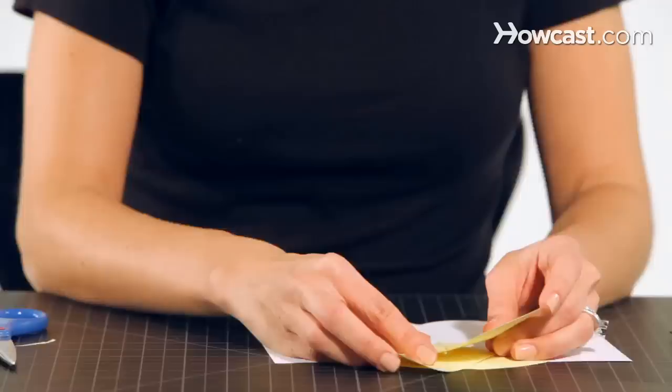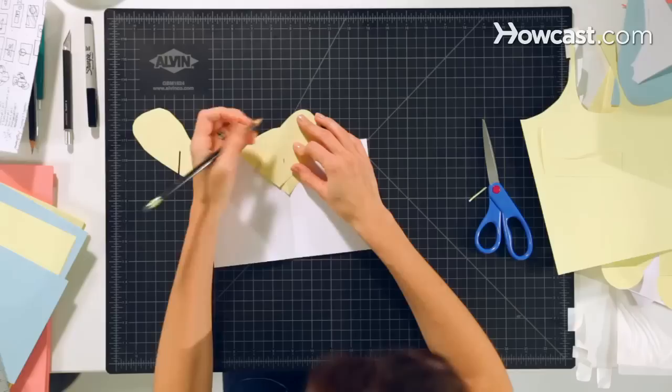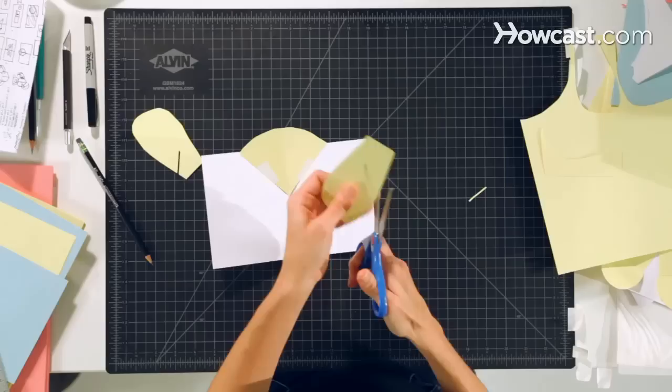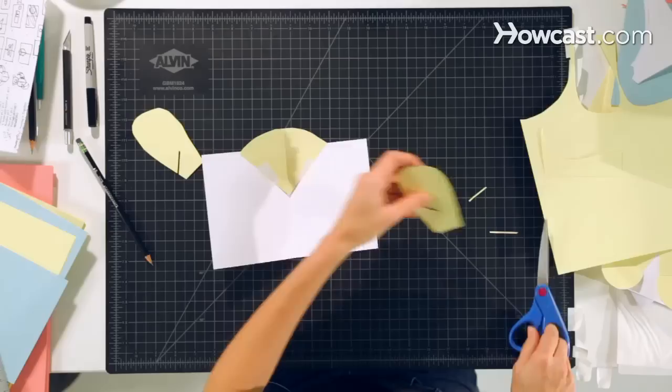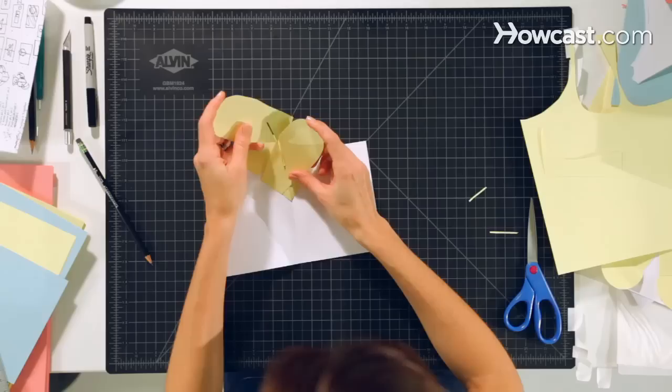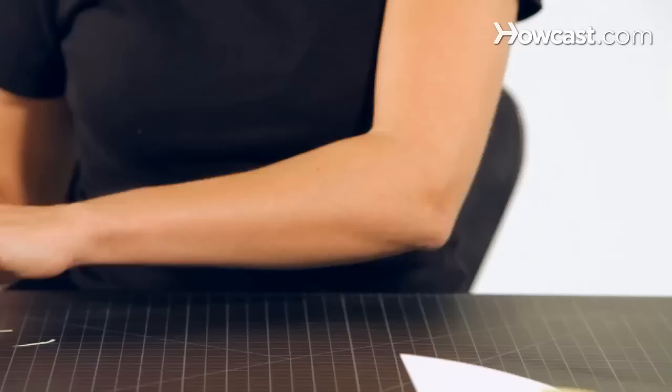Line up your wings where you want them. And you're going to mark the top of the first slot, because now we're going to make a slot like this, so that they'll be able to interlock. Like so.